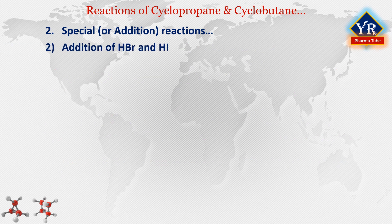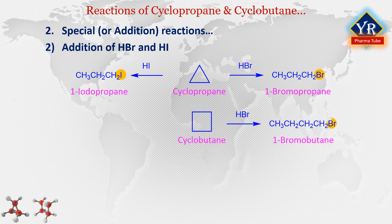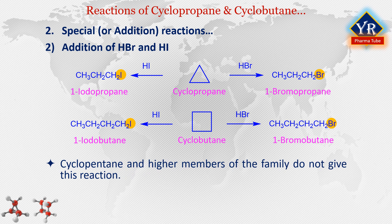Addition of hydrobromic acid and hydroiodic acid: Cyclopropane and cyclobutane, on reaction with hydrogen halides such as concentrated hydrogen bromide and hydrogen iodide, undergo ring opening to give haloalkanes. When cyclopropane reacts with hydrogen bromide it yields 1-bromopropane, and with hydrogen iodide it gives 1-iodopropane. Similarly, cyclobutane reacts with hydrogen bromide to yield 1-bromobutane and with hydrogen iodide to give 1-iodobutane. Cyclopentane and the higher members of the family do not give this reaction.